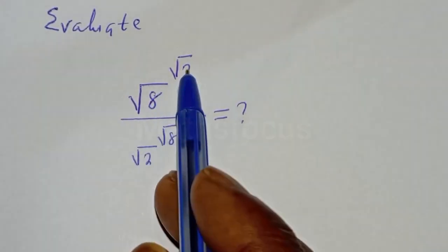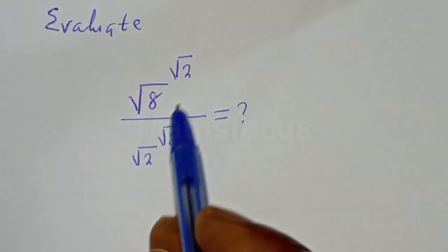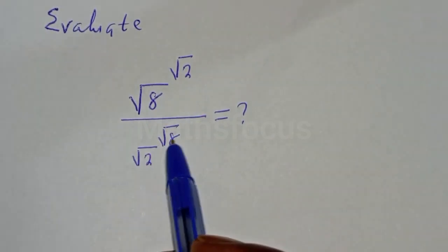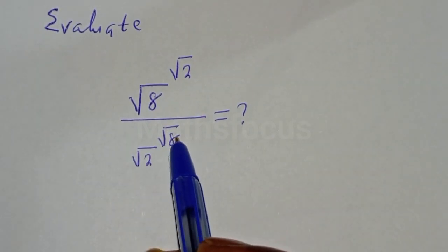Evaluate square root of 8 to the power of square root of 2, divided by square root of 2 to the power of square root of 8.